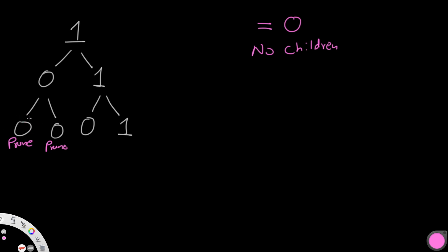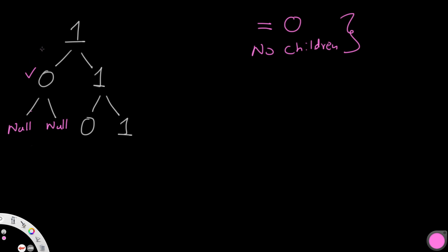Changing a node to null actually helps us as we go further up. Since we prune those two bottom nodes, we change their values from zero to null. Now we go up to the parent root and check if we need to prune that as well. The condition is the same: check if it's not equal to one — this one is zero, so that's one condition — and then check if it has no children. Since we changed its children's values to null, the left child is null and the right child is also null. So we can prune this node as well and make it null.